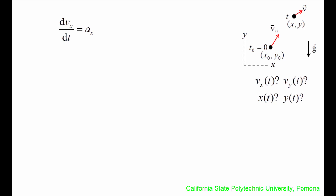We start with the equation for the acceleration in the x-direction, which we will call ax. This is equal to the time rate of change of vx, written as dvx/dt. Let's rearrange the expression to isolate dvx, then integrate ax dt from the initial time, which is 0 seconds, to the final time t. dvx is integrated from the initial velocity vx0 to the final velocity vx.